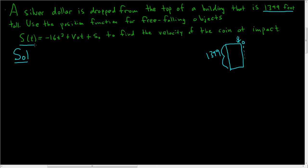So in our position function, the initial position, S sub 0, will be equal to 1,399. Because the dollar is being dropped, the initial velocity will be 0. So V sub 0 is equal to 0.